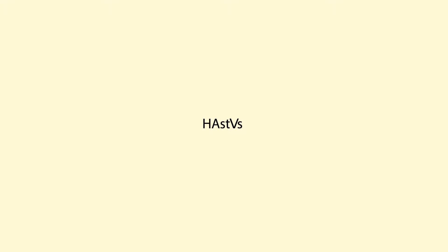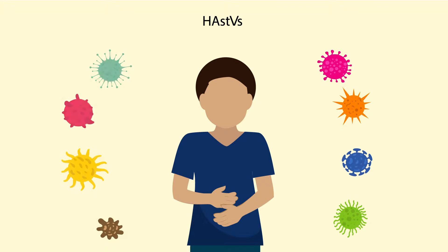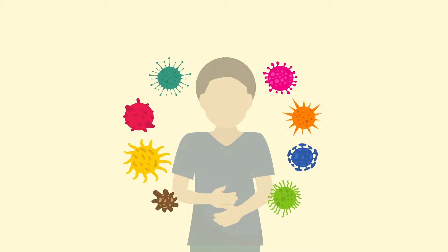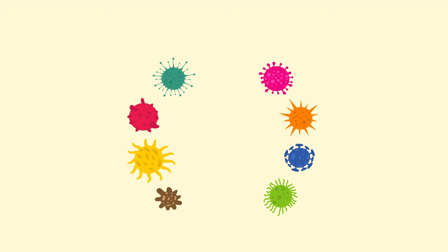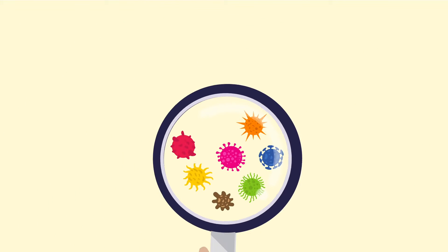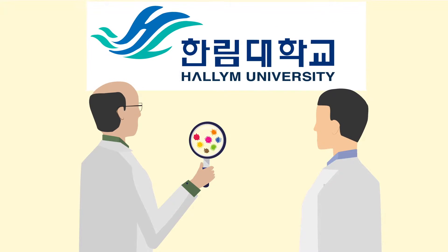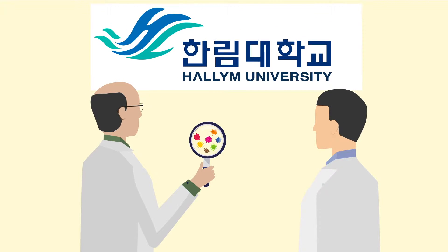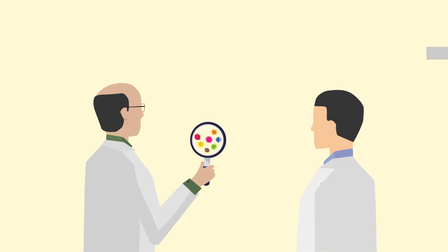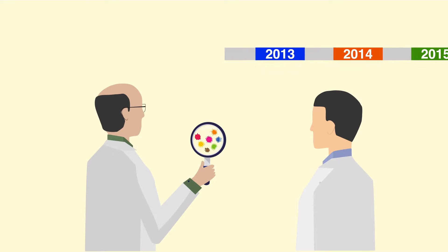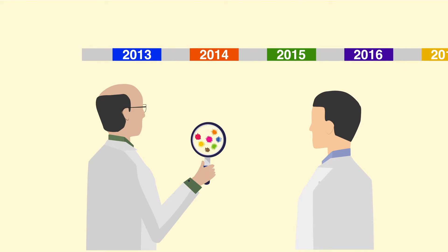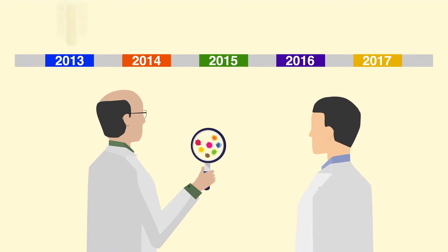Human astroviruses are one of the major causes of acute gastroenteritis. Classic human astroviruses can be classified into eight genotypes. Scientists from Hallam University sought to determine the incidence of the various human astrovirus strains using a multi-year timeframe, which has been lacking in prior studies.